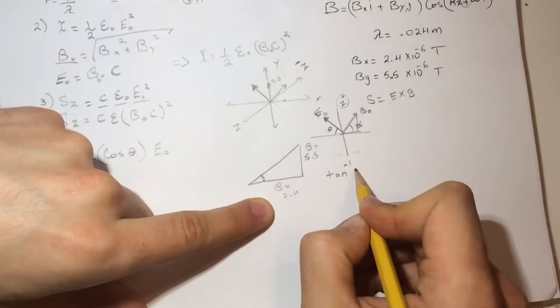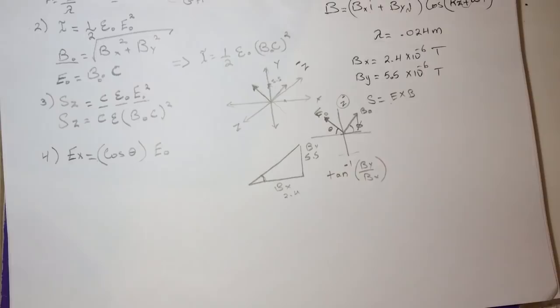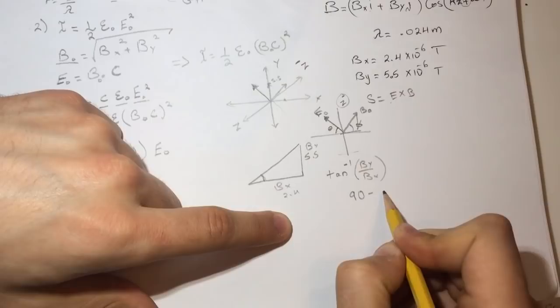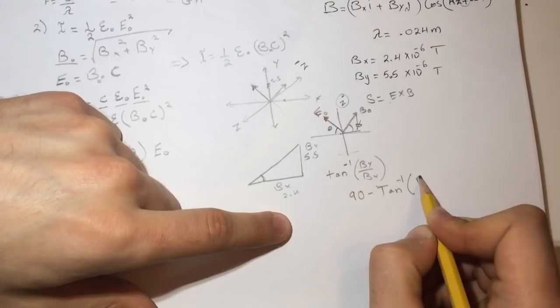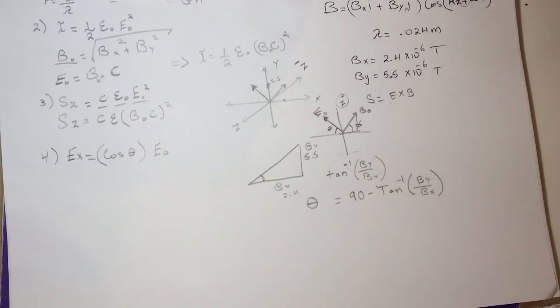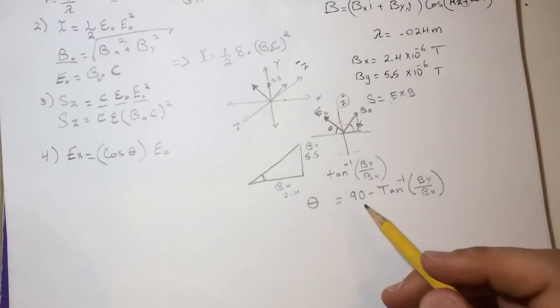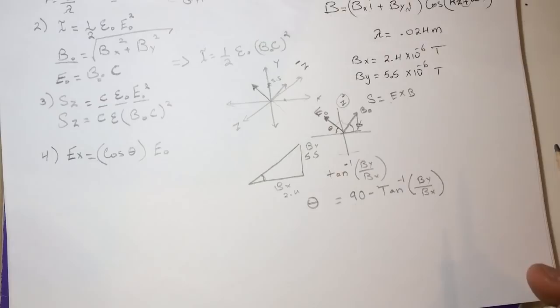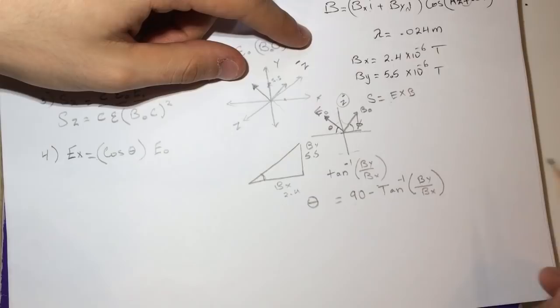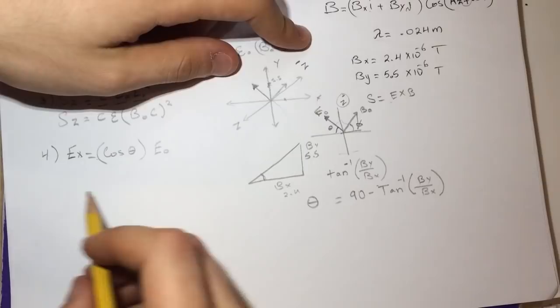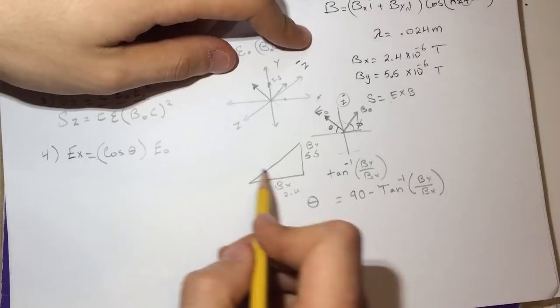The angle phi is the inverse tangent of By over Bx. To get the angle for Ex, we do 90 minus the inverse tangent of By over Bx. The whole triangle is 180 degrees, so theta equals 90 minus arctan(By/Bx). From that you can get Ex at t equals zero.